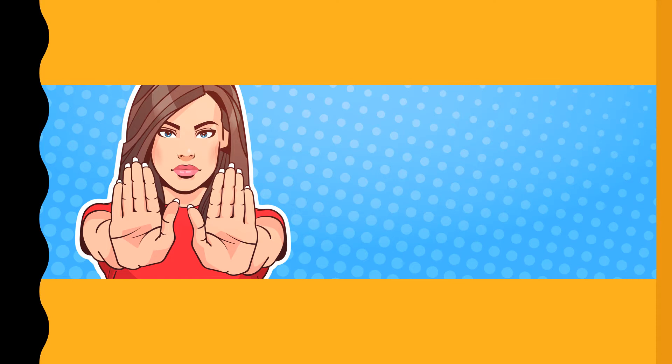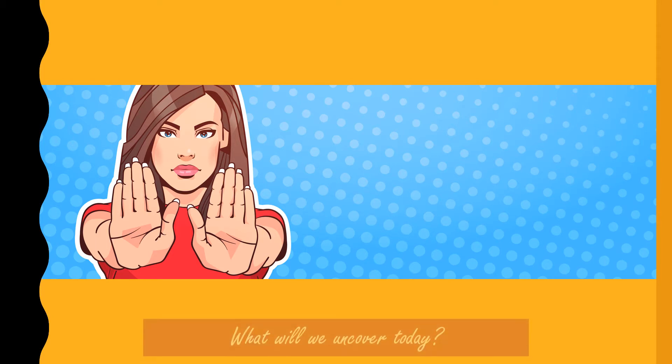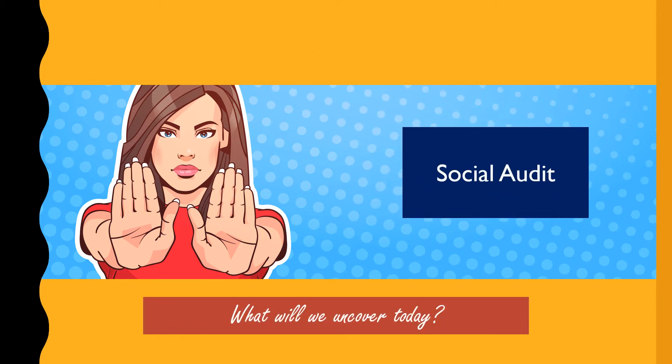Hello everyone and welcome back to a short video on business studies. I know it has been a while — my deepest apologies. I'm back and we are still in Unit One: Business and its Environment. The chapter we are focusing on today is stakeholders, and specifically a small portion within stakeholders called social audit.